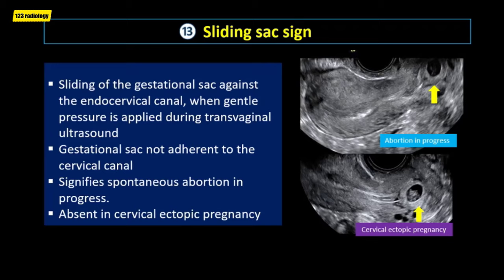In the banana sign, the cerebellum curves around the midbrain, giving the appearance of a banana shape. This sign is seen on axial images through the posterior fossa of the fetus. It is associated with conditions such as Chiari 2 malformation and is also seen in the majority of fetuses with spina bifida.